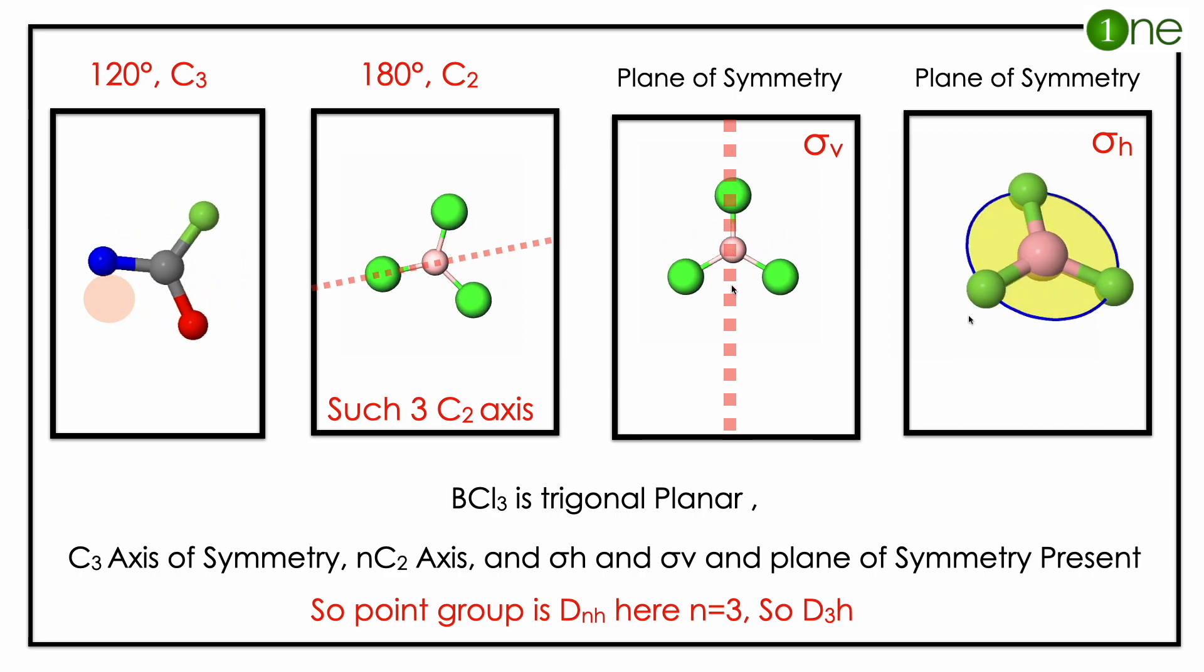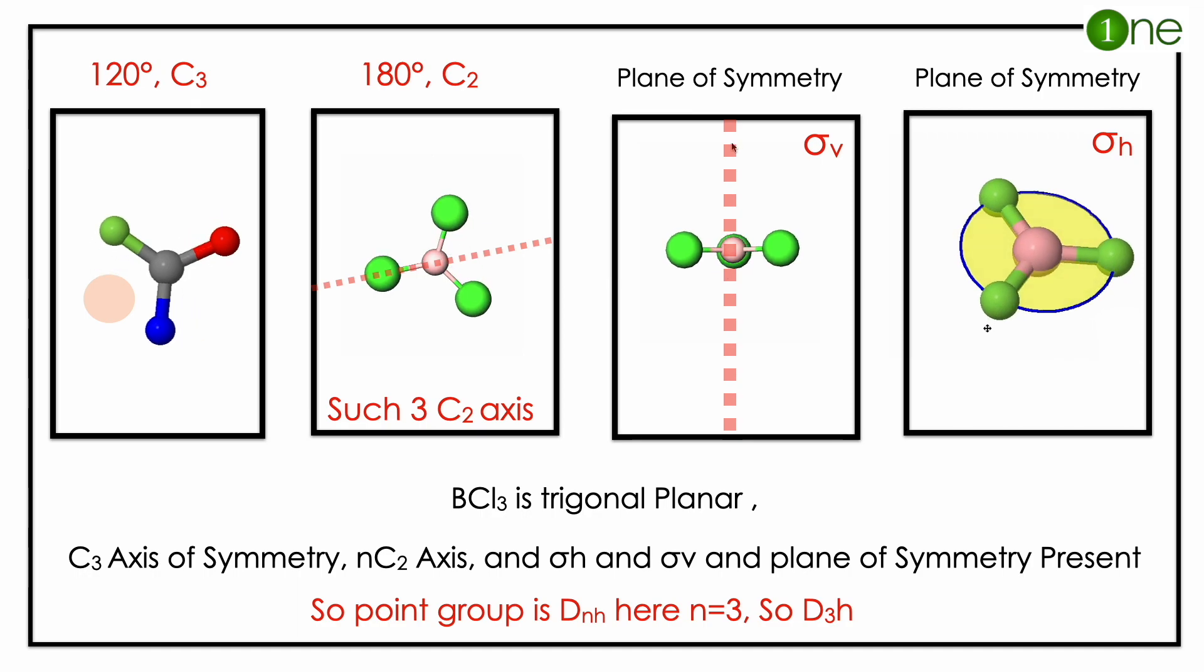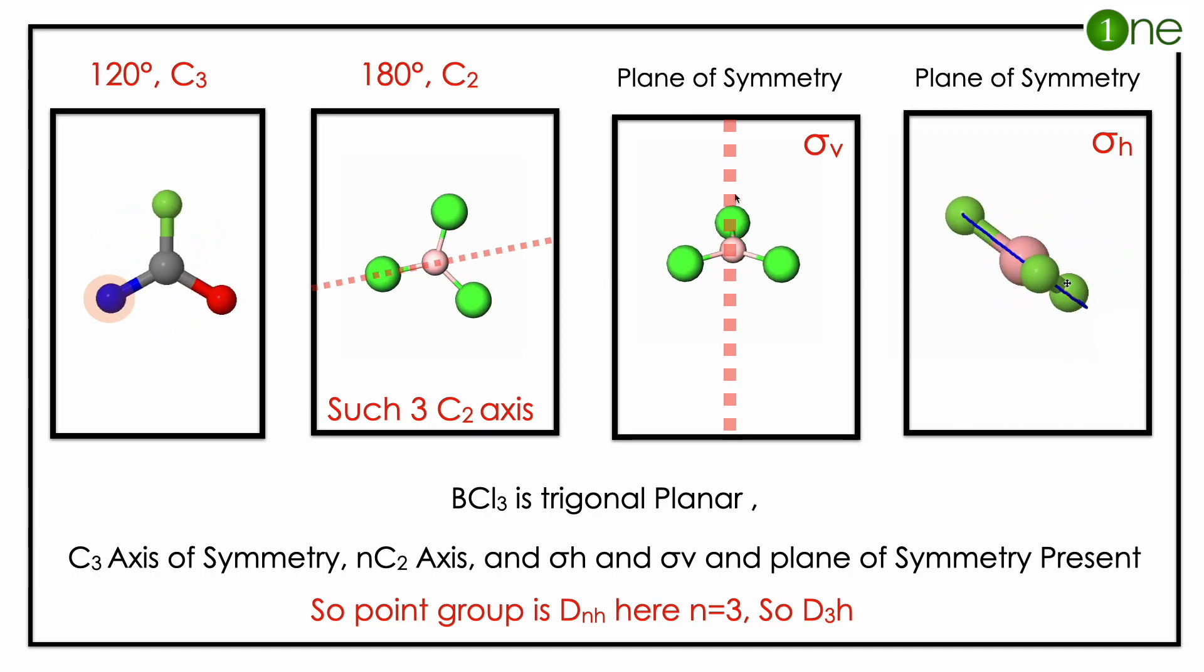Further, it has C2 axis also. It has three C2 axes that go through the atom with bond. So it has three C2 axes and the plane of symmetry. The plane goes through boron and chlorine, you have sigma v plane.